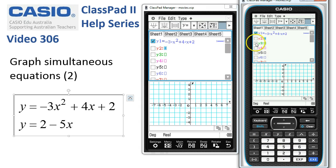Tap Execute. That puts the cursor on the next line. We're ready to start the next one. 2 minus 5x. And tap Execute again so that both functions have been selected.